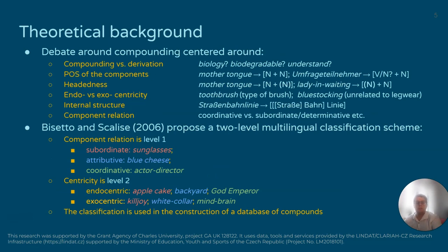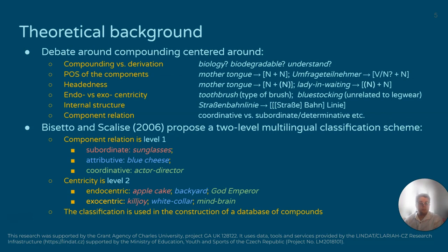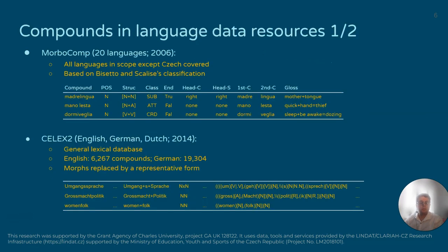The debate around compounding has been centered around a number of topics, but to us the most important is compound relation — meaning whether one of the compound's components plays a prominent role or not. If it doesn't, it's a coordinative compound such as black and white. If one does play a prominent role, like in mother tongue, which is a type of language, not a type of mother. Bissetto and Scalise propose a two-level multi-classification scheme: the first is component relation and the second is centricity.